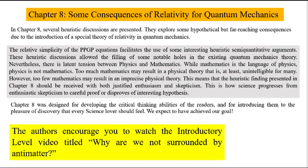Nevertheless, there is a latent tension between physics and mathematics. While mathematics is the language of physics, physics is not mathematics. Too much mathematics may result in a physical theory that is, at least, unintelligible for many. However, too few mathematics may result in an imprecise physical theory. This means that the heuristic findings presented in Chapter 8 should be received with both justified enthusiasm and skepticism. This is how science progresses — from enthusiastic skepticism to careful proof or disproof of interesting hypotheses. Chapter 8 was designed for developing the critical thinking abilities of the readers and for introducing them to the pleasure of discovery that every science lover should feel.